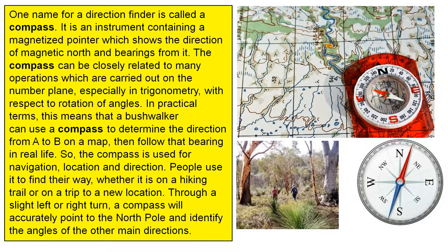The compass is used for navigation, location and direction. People use it to find their way whether it is on a hiking trail or on a trip to a new location. Through a slight left or right turn a compass will accurately point to the north pole and identify the angles of the other main directions.